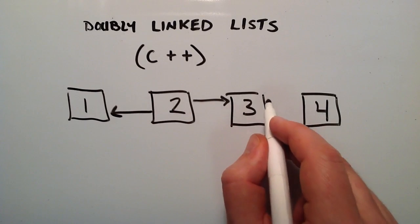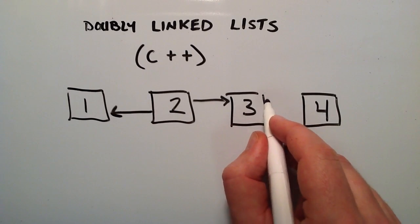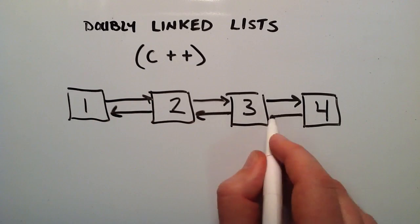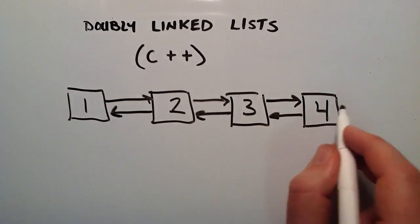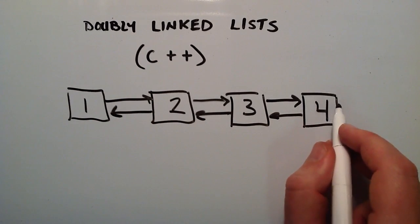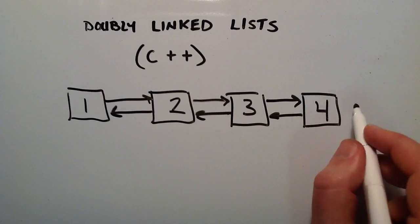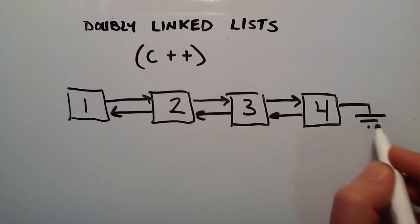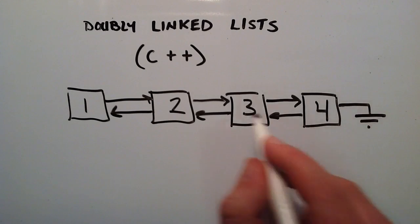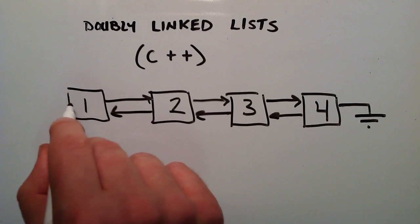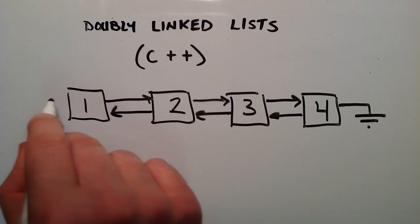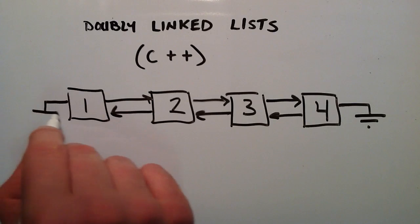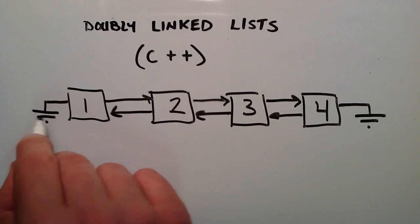Each node has these two links, so we're just going to draw that all the way through our diagram here. This node also has the ability to point to another node, and since he's going to be the end, we'll make him null-terminate here. And this one has the ability to point to the node in front, but since this is going to be the beginning, we'll make this one point to null as well.